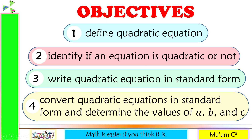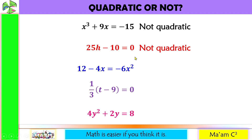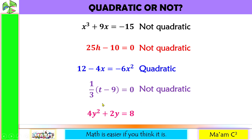Let's have a quick diagnostic test. Determine if the following is quadratic or not. Number 1 is not quadratic. Number 2 is also not quadratic. Number 3 is quadratic. How about number 4? This is not quadratic. And the last one is quadratic. Do you now have an idea how to determine if it is quadratic or not?